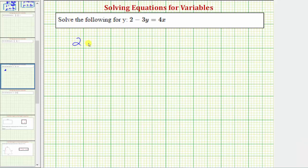We want to solve the equation 2 minus 3y equals 4x for the variable y.